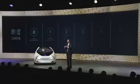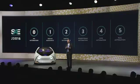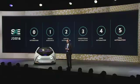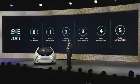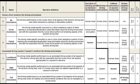There are six levels of driving automation defined by the SAE International Standard J3016, ranging from Level 0, No Automation, to Level 5, Full Automation. This chart from SAE International describes the automation levels in more detail.